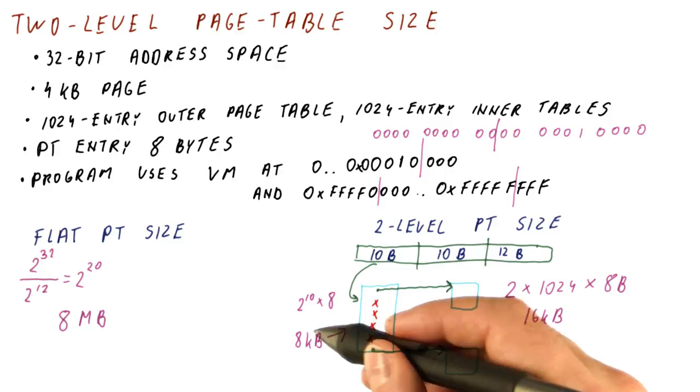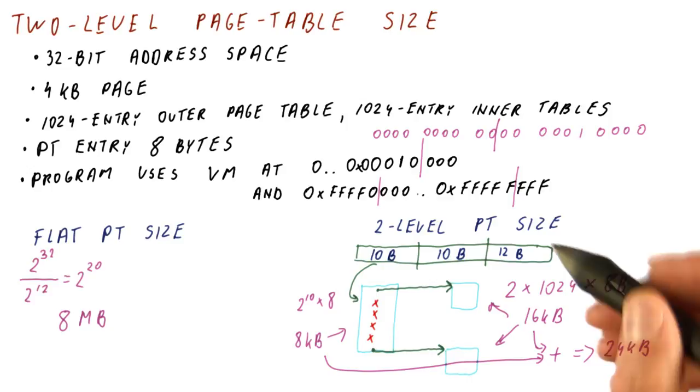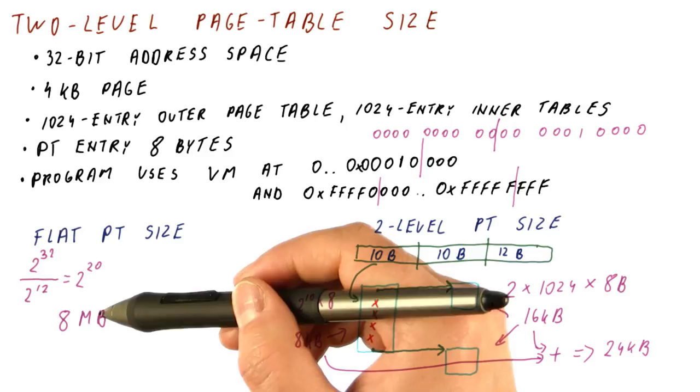Adding the size of the outer page table, we get only 24 kilobytes. So the size of a two-level page table for this application is only 24 kilobytes compared to 8 megabytes for the flat page table.